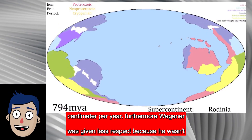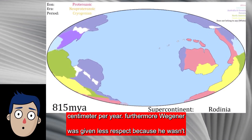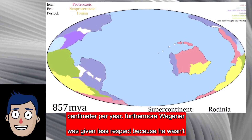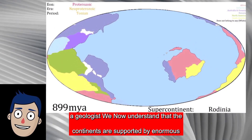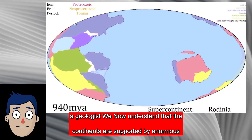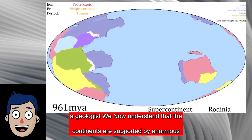Another issue was an implausibly high estimate of the speed of continental motion, which was 250 centimeters per year. Furthermore, Wegener was given less respect because he wasn't a geologist.